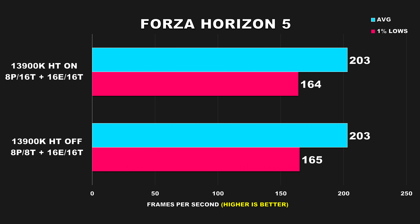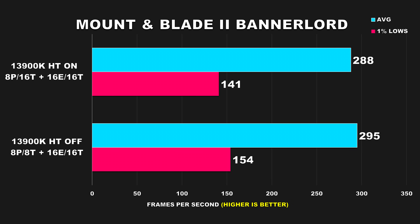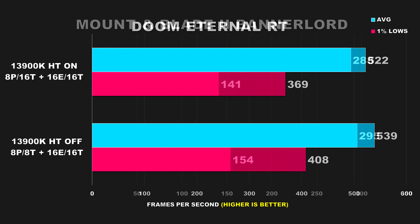Forza Horizon 5 is a very fun open-world title — I'd recommend it over the newer one which was unfortunately very poorly optimized. This game provides very consistent performance across both configurations. Mount & Blade II: Bannerlord shows that while average FPS doesn't change much, disabling hyper-threading on the 13900K improves 1% lows by around 8%. I personally had no complaints about performance with hyper-threading enabled, so again, not really a huge deal here.